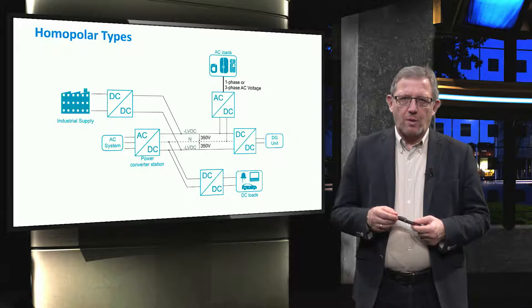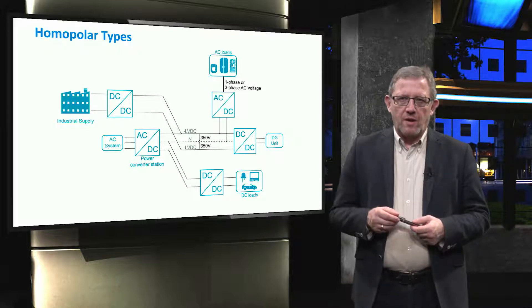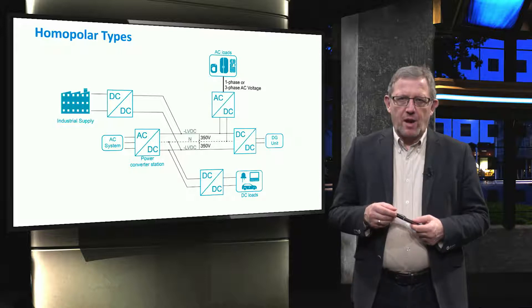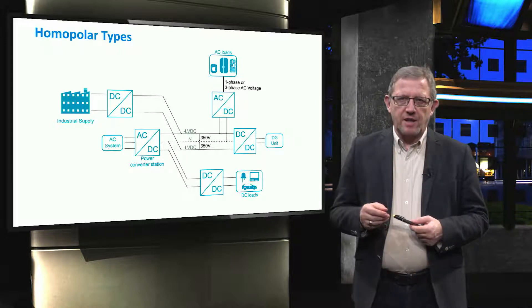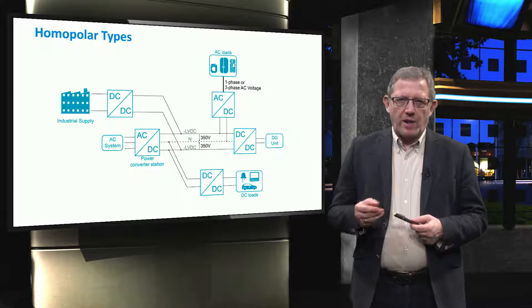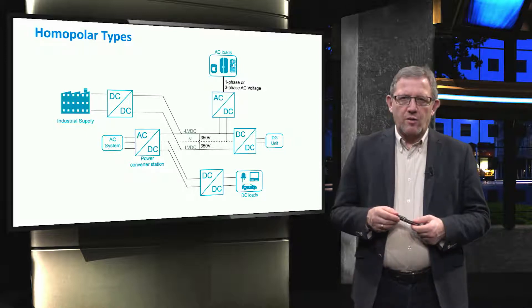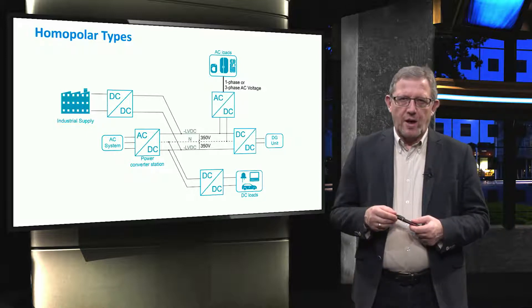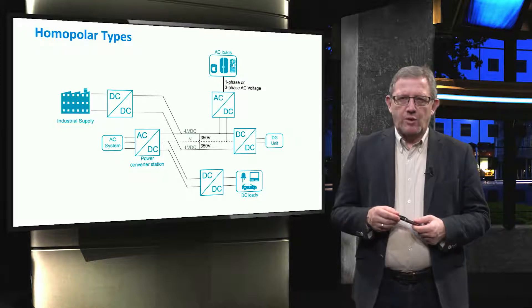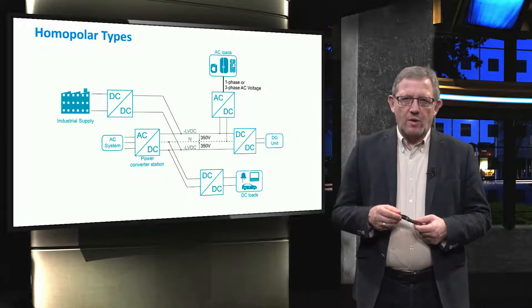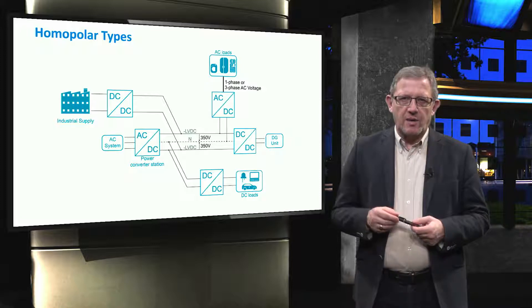For homopolar type, there is a minus low voltage direct current, neutral and another minus. Homopolar could also have two plus instead of minus. This type of solution can be adapted when there is the need for reusing three-phase cables, therefore we have three lines available.